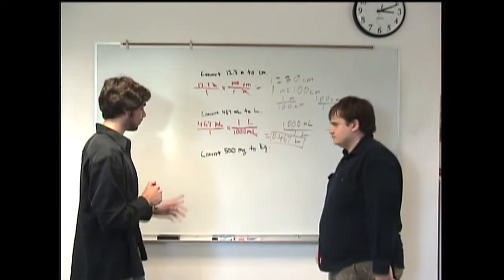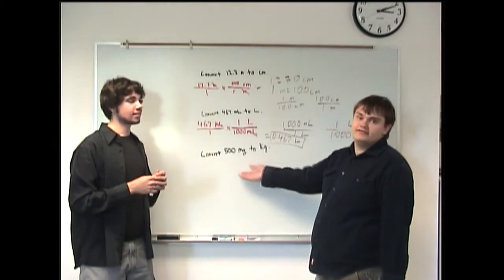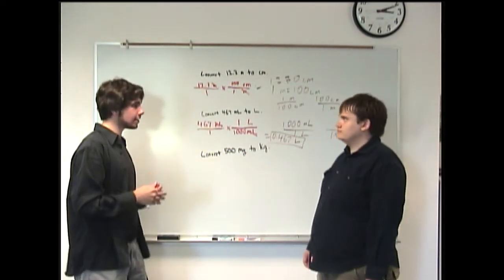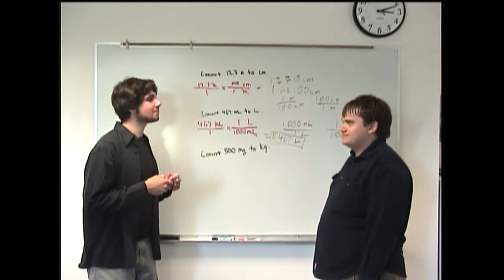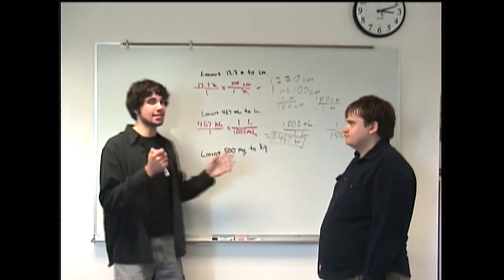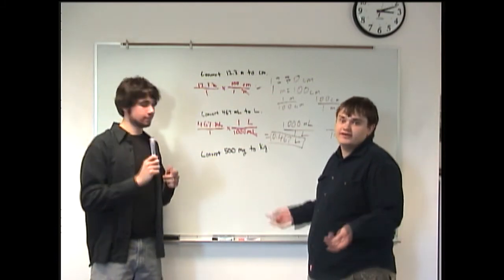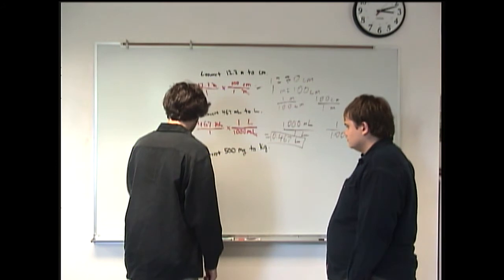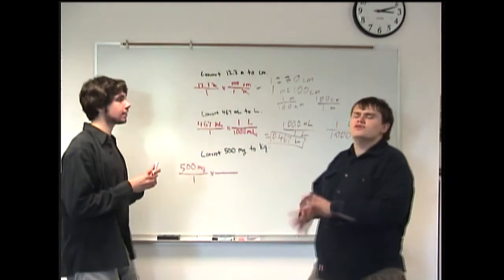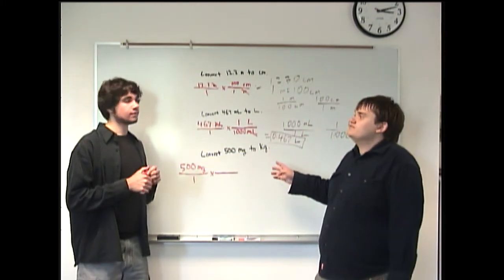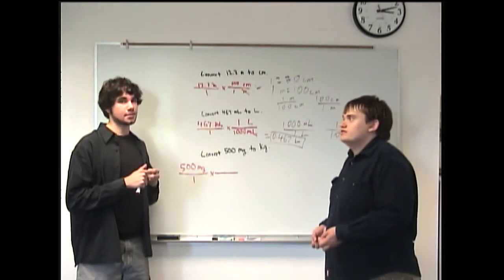Finally, our last example — and this one's a little trickier, because we're not starting with a base unit at all. We're going straight from one prefix to another: milligrams to kilograms. This is an example where the staircase — or stepladder — would be helpful. Even without it, you just have to use two different conversion rates. So again, we start with what we're given: 500 milligrams over one. There is no direct conversion rate from milligrams to kilograms, but there is one between milligrams and grams, and grams and kilograms, so we'll use those.